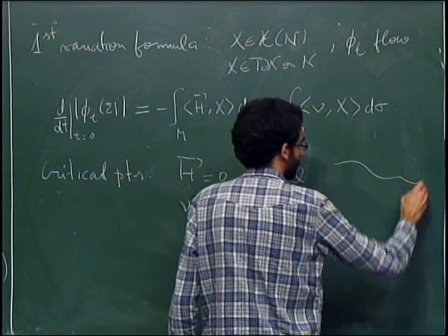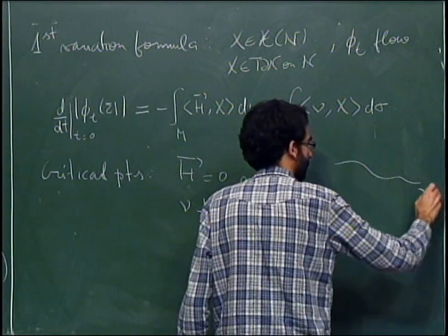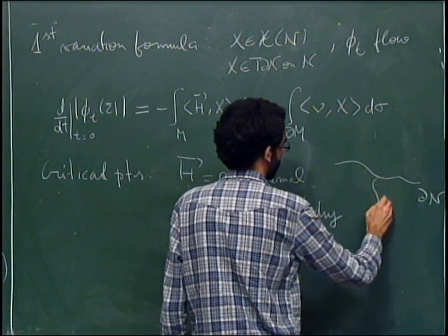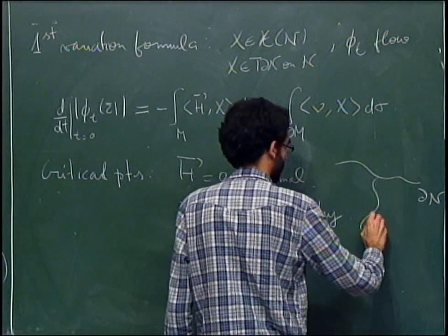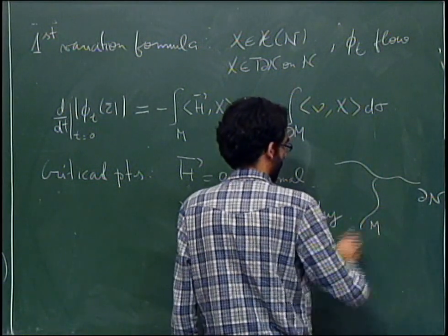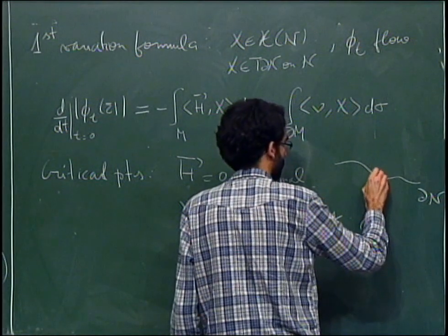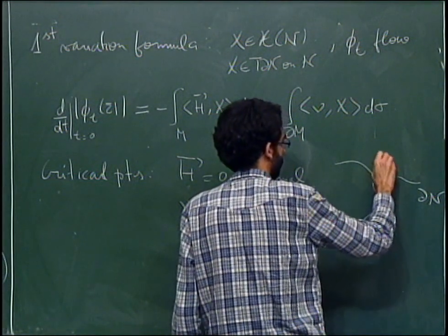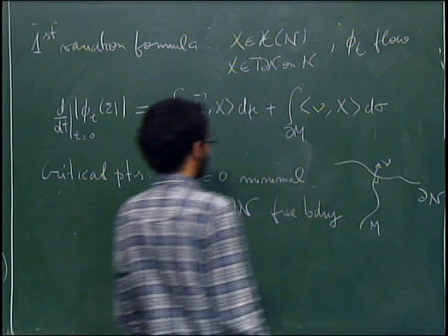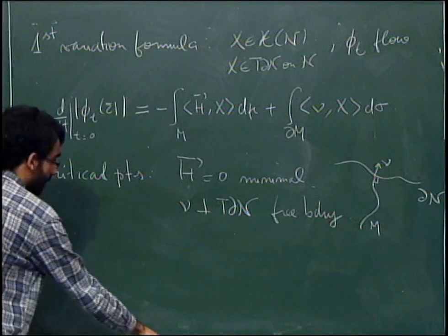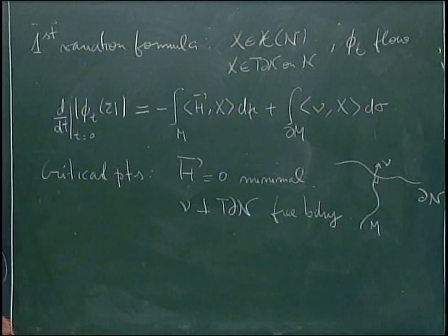If you want a picture: here I have the boundary of N, and then my hypersurface M, and it meets the boundary orthogonally. The next step is, of course, computing the second variation formula.